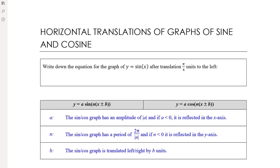Let's recall what it looks like in an equation when we are translating left and right. If we write down the equation for y = sin(x) after a translation of π/4 units to the left — translations to the left and right happen when we're adding or subtracting inside the sine function, and they appear somewhat backwards to what you feel like they should. Translating to the left means we're adding something to x inside the function, which seems counterintuitive, but it follows from our theory around transformations.